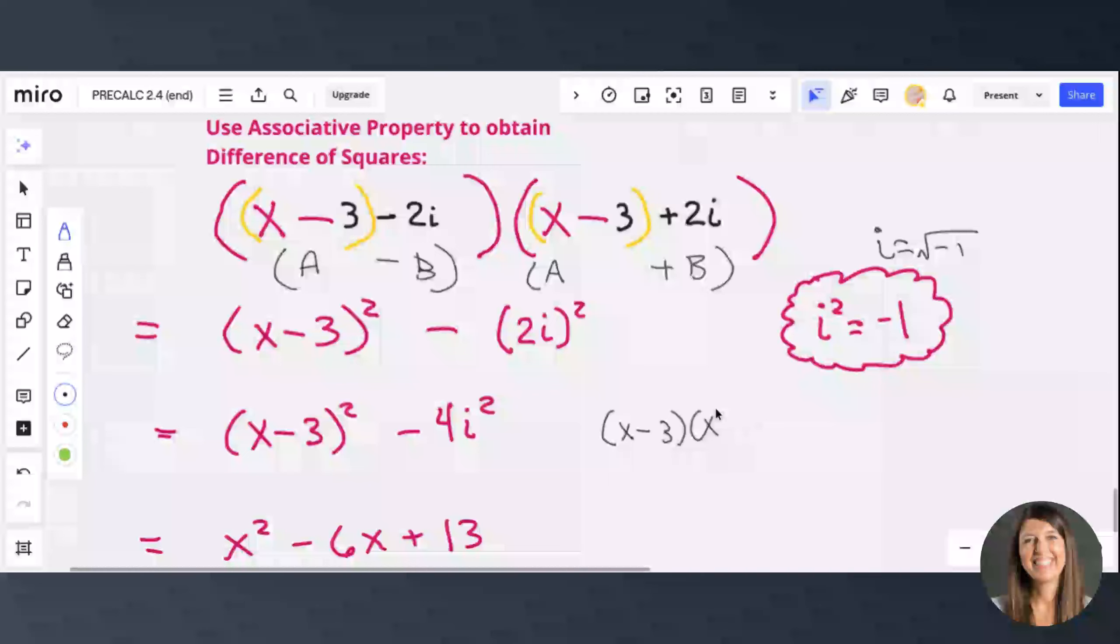This is a very common mistake, so be careful with that. And then this negative 4i squared is negative 4 times negative 1 because i squared is negative 1. So this is going to be a plus 4 here.